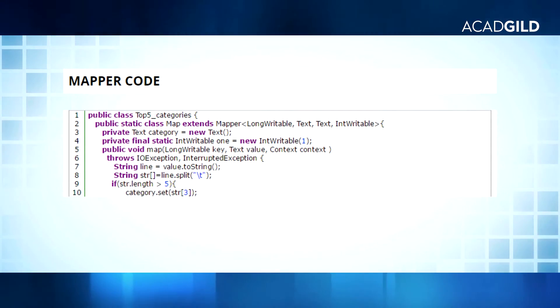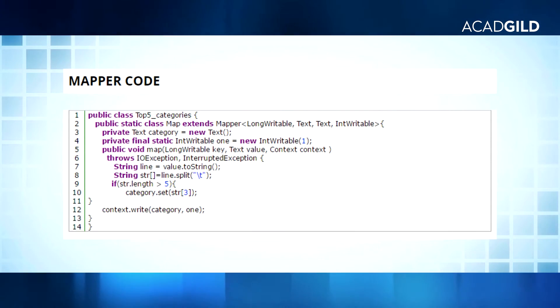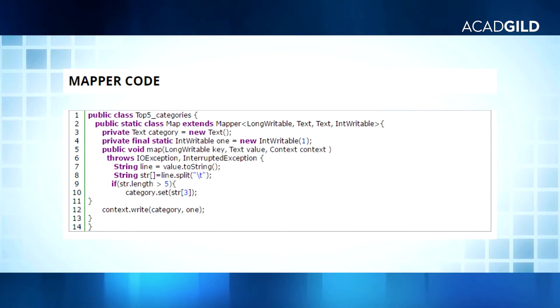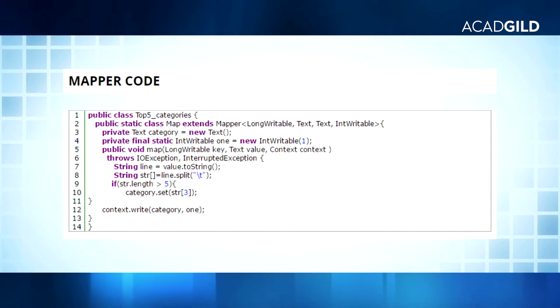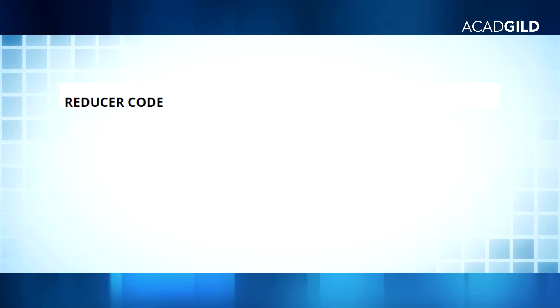In line 10, we are storing the category, which is in the fourth column. In line 12, we are writing the key and value into context, which will act as the output of the map method. That concludes the reducer code.